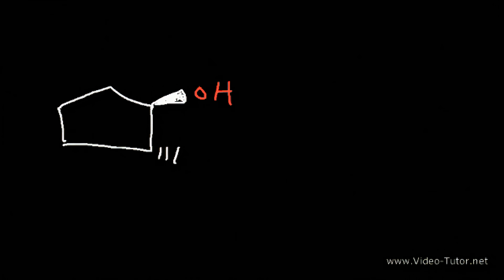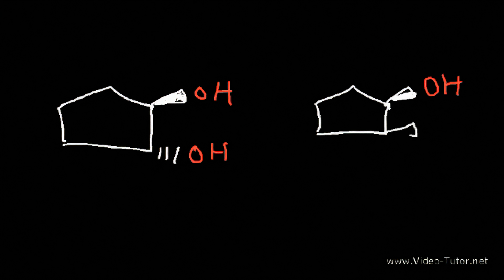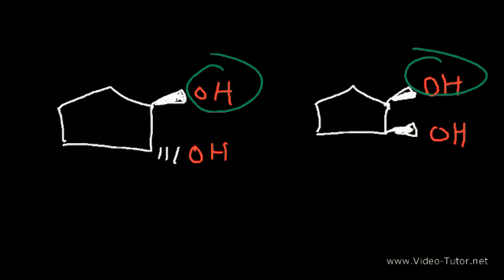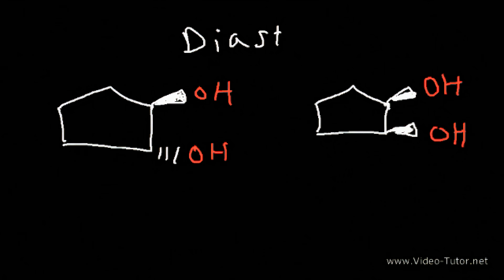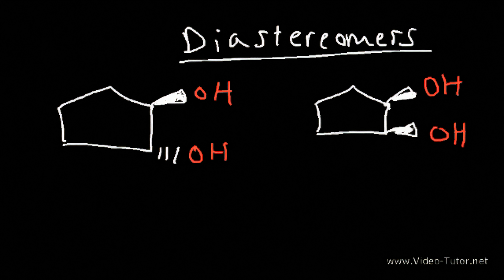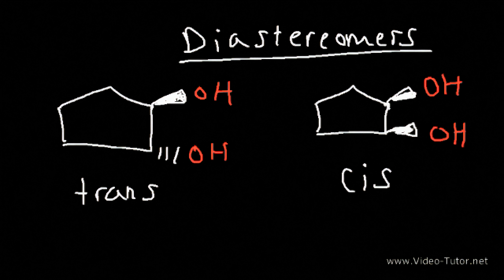How would you describe the relationship between these two molecules? Notice that the first chiral center remained the same, but the second one changed. Whenever only some chiral centers change but not all, we have a case of diastereomers. By the way, you can also describe them as cis-trans geometric isomers — this is the cis isomer and this is the trans isomer. Cis-trans geometric isomers are always diastereomers, but not all diastereomers are cis-trans isomers.